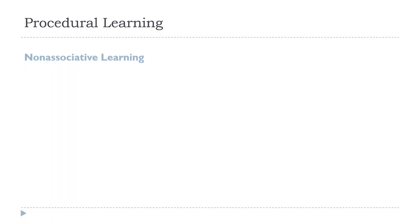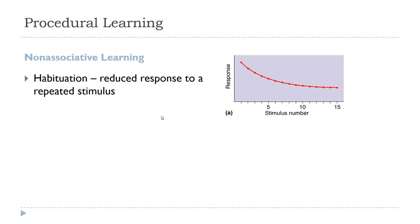Procedural learning or memory can be divided roughly into two types. Non-associative learning includes things like habituation, which is probably the simplest form of memory there is. It involves a reduced response to a repetitive stimulus — if you have a response to a stimulus, whether painful or not, that response reduces over time as you're repeatedly exposed to it. That's habituation.